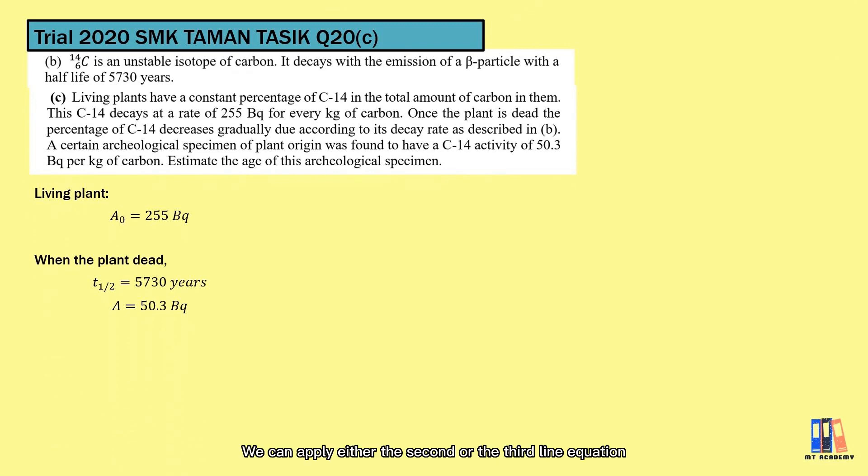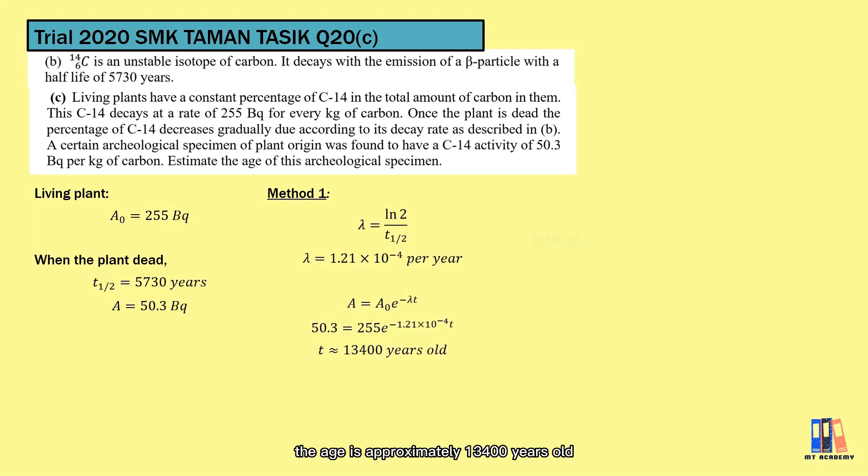So we can apply either the second or the third line equation as in the summary. Let's try both methods. First is that we need the information of the decay constant, which is ln2 divided by half-life. Then we apply the formula, the age is approximately 13,400 years old.